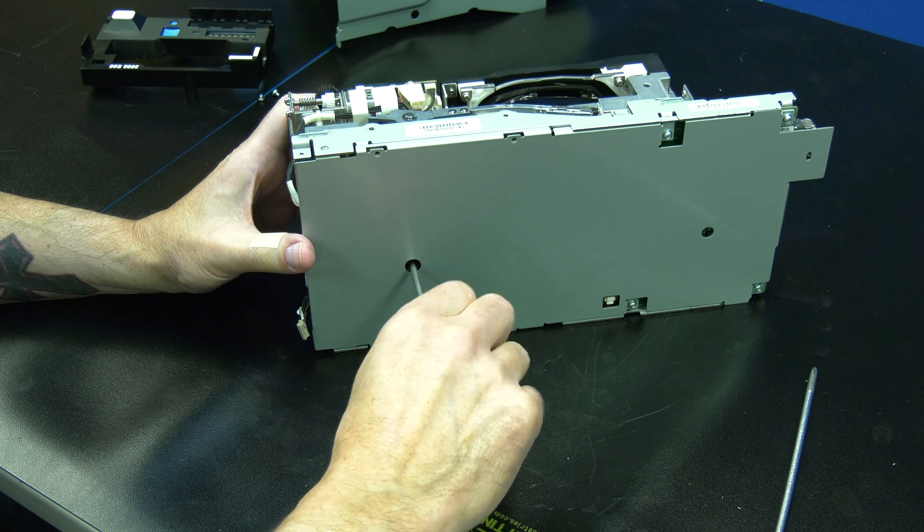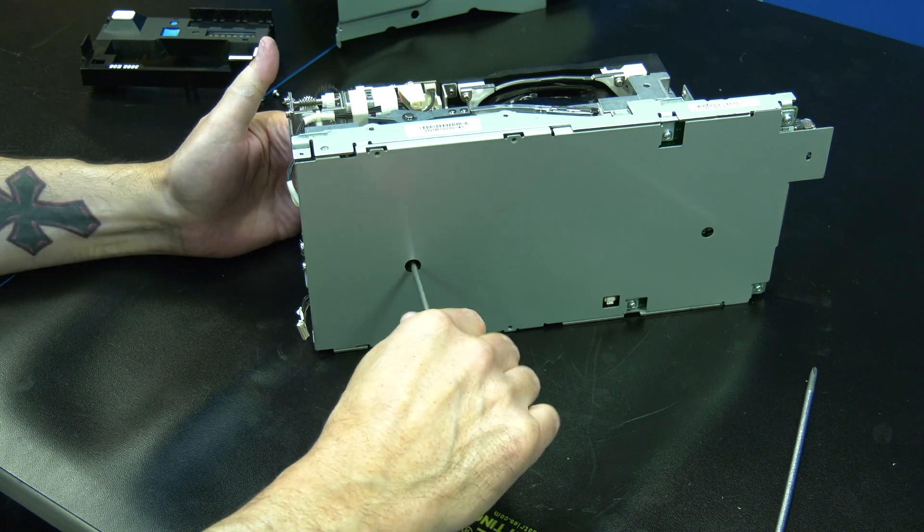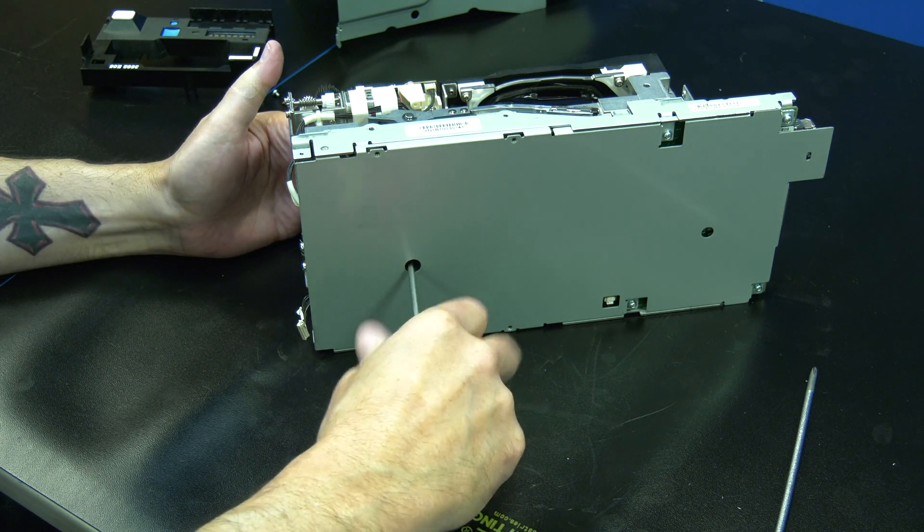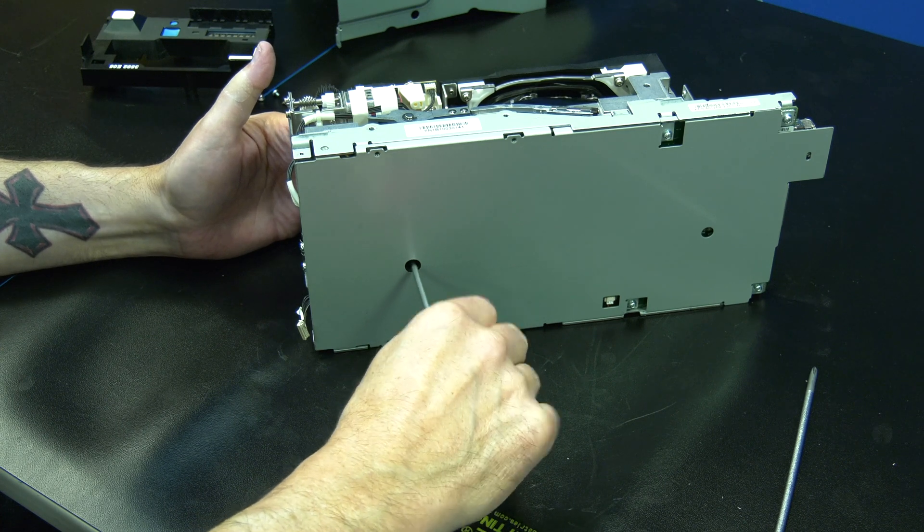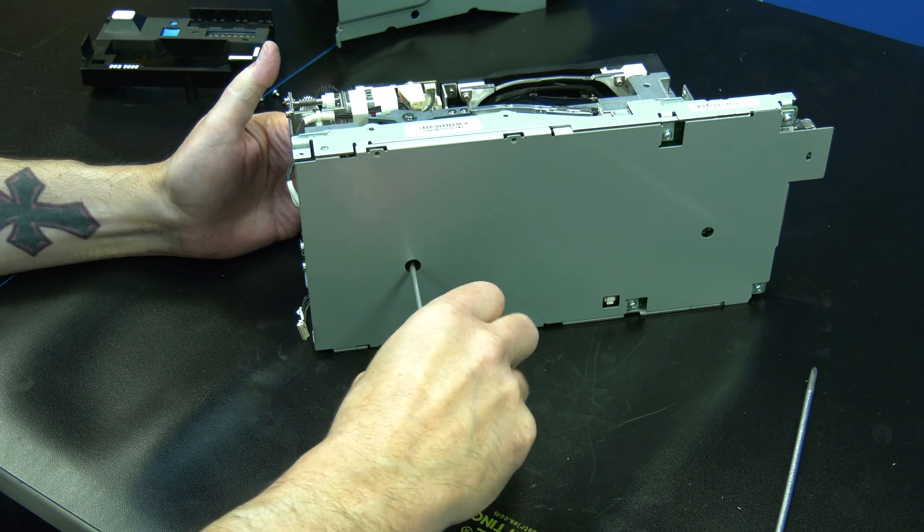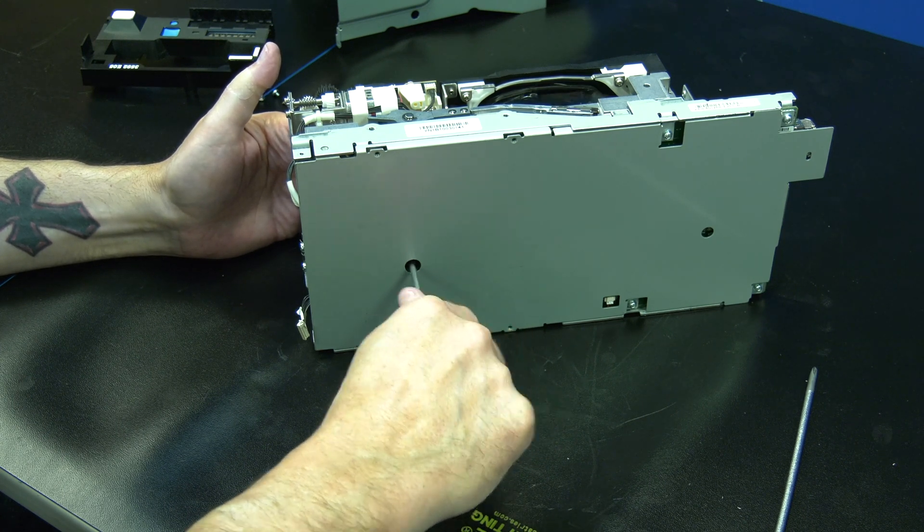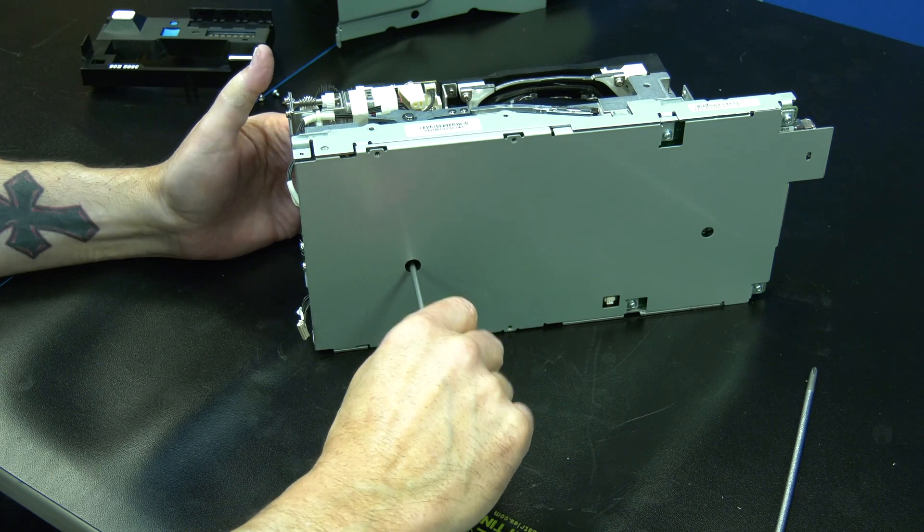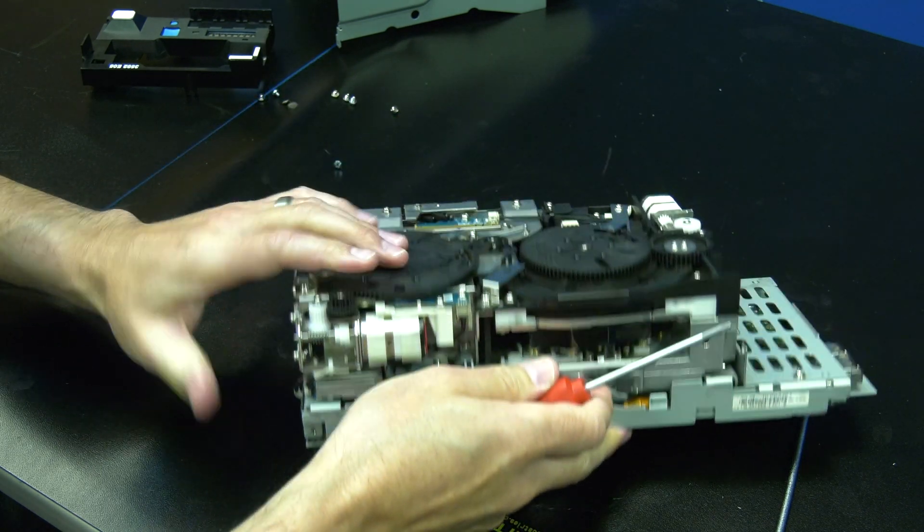To ensure the tape is rewound all the way, you will need to insert a torque screwdriver into the hole in the bottom of the drive and ensure it engages the front spool. Turn the screwdriver clockwise to retract all of the tape media into the cartridge until the tape becomes taut and the spool will not turn any further.